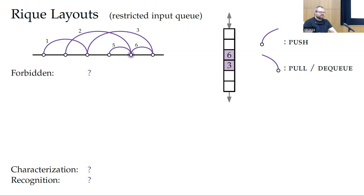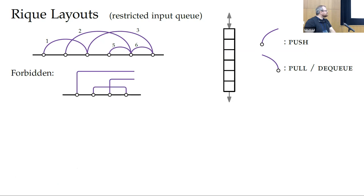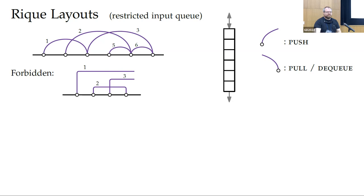For requeue layouts, we found a much simpler forbidden configuration than for dequeue layouts. It's essentially two different forbidden configurations but the order in which the two edges end doesn't matter. To see why this configuration cannot appear: we place vertices one, two, three; we have no choice but to push them all, but then we need to remove number two, which is stuck in the middle — so it's clearly not a requeue layout.